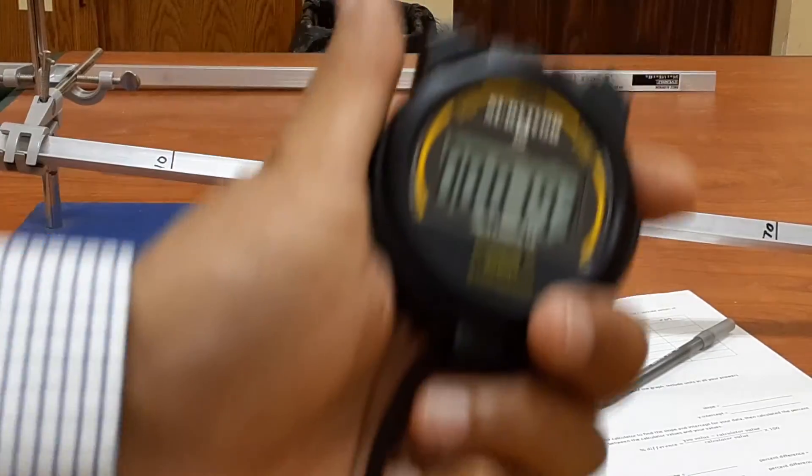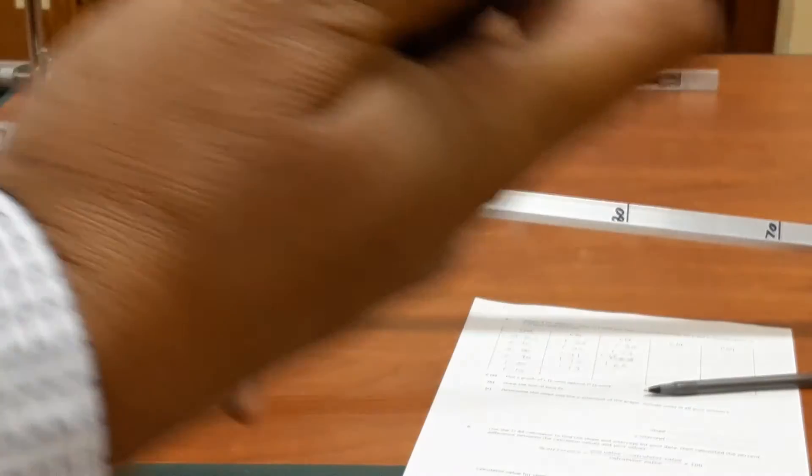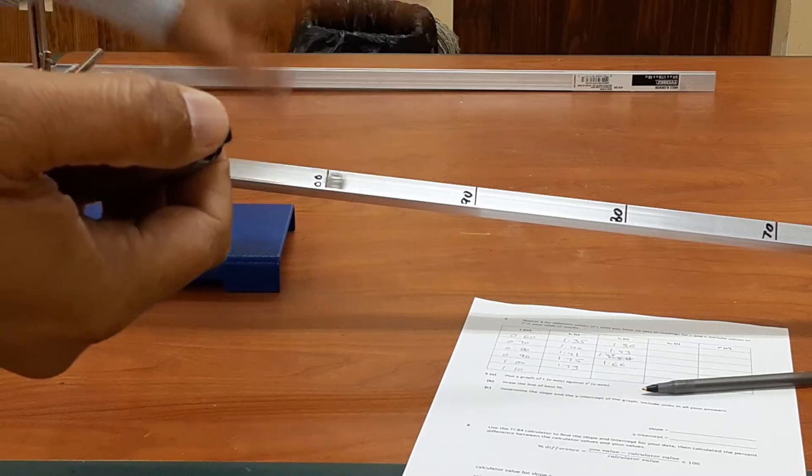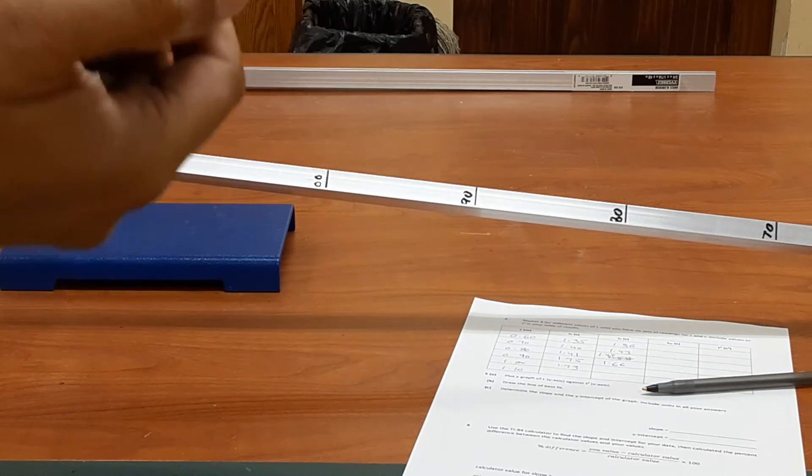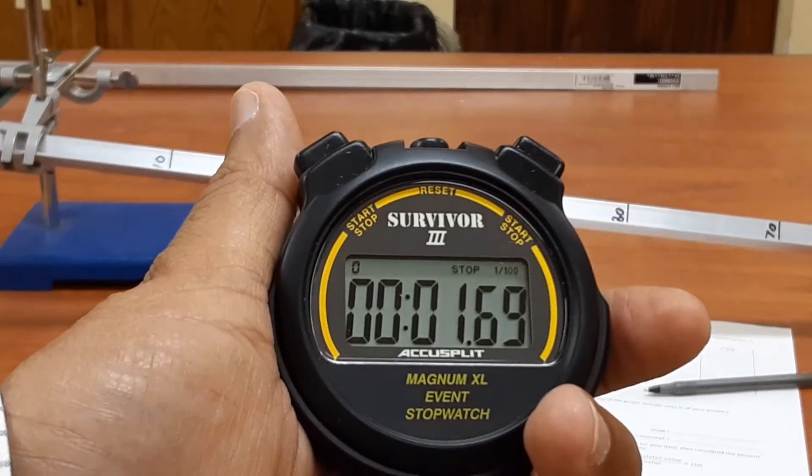Now length is 1.00 meter. Try 2. Distance 1 meter. Try 2. 1, 2, 3. So time is 1.69 second.